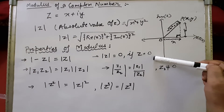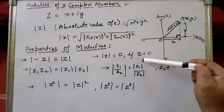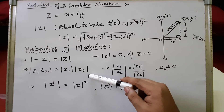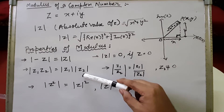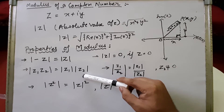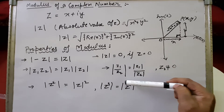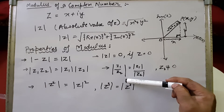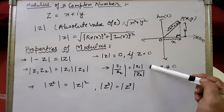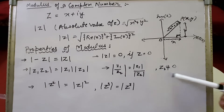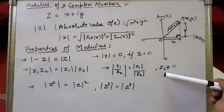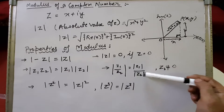The absolute value will only be zero when the complex number itself is zero, that is 0 plus 0i. The third property: the modulus of the product of two complex numbers z1 and z2 satisfies mod of z1·z2 equals mod of z1 into mod of z2. Similarly, for division, mod of z1 upon z2 equals mod of z1 upon mod of z2, provided z2 is not equal to zero — otherwise the denominator becomes zero and the term is undefined.